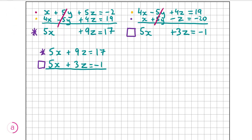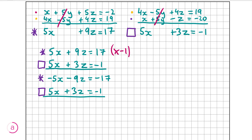Here are our two new equations, both with only two variables. There's no variable that cancels straight away, so we need to do some multiplication. I'm going to multiply equation star by minus 1, which gives us minus 5x minus 9z equals minus 17. The bottom equation stays the same. Doing the sums: minus 5x plus 5x gives 0, so the x's are eliminated. Then minus 9z plus 3z gives minus 6z, equal to minus 17 minus 1, which is minus 18. Dividing both sides by minus 6 gives z equals 3.